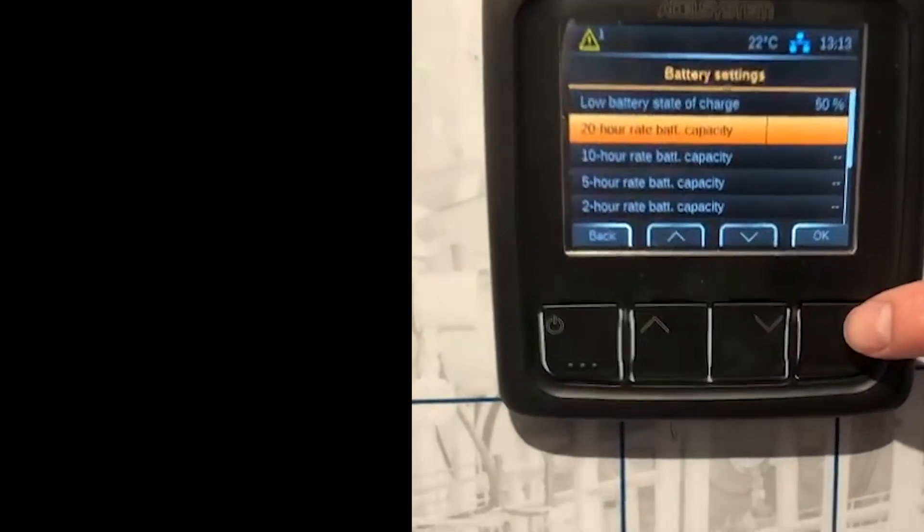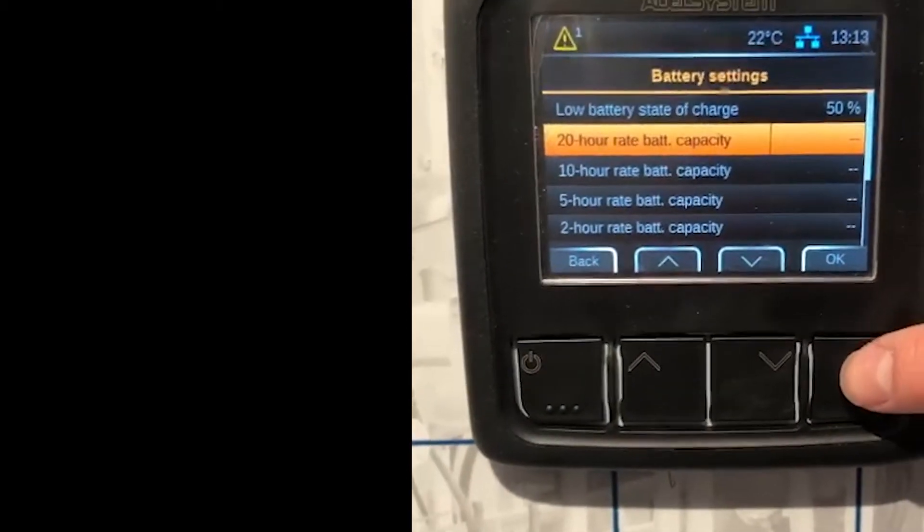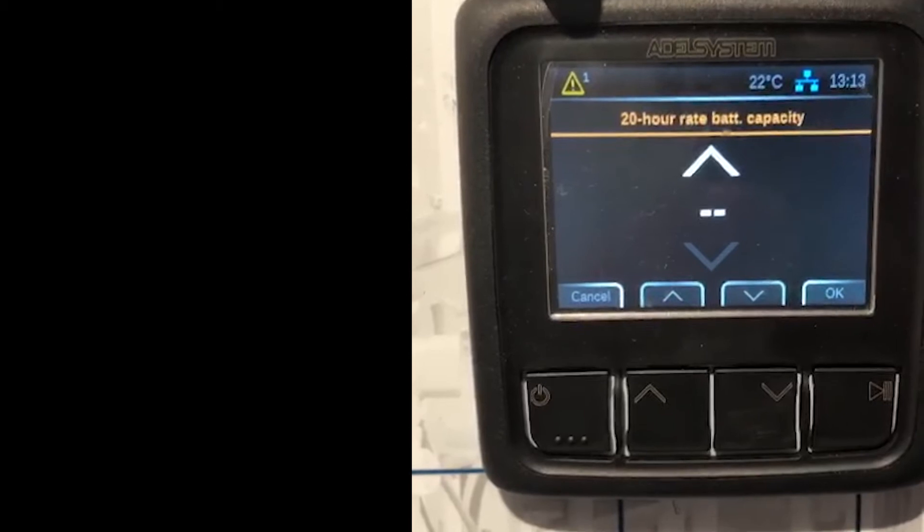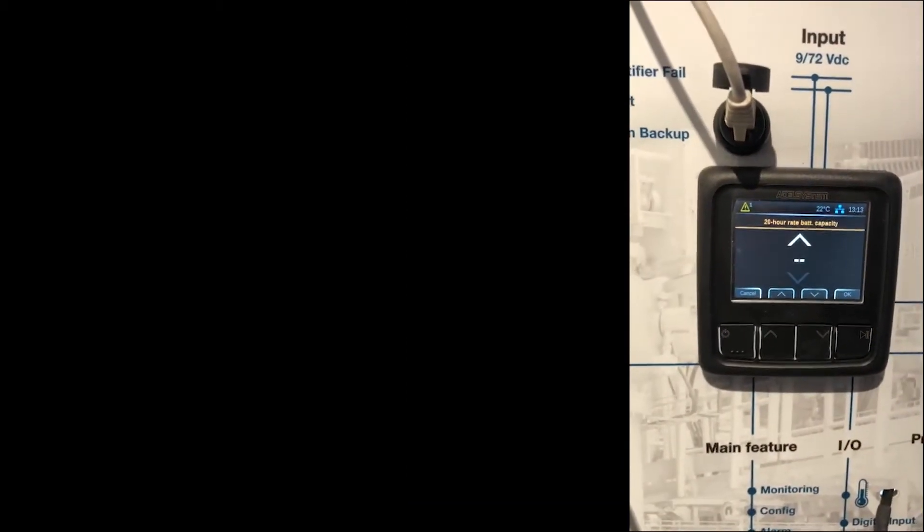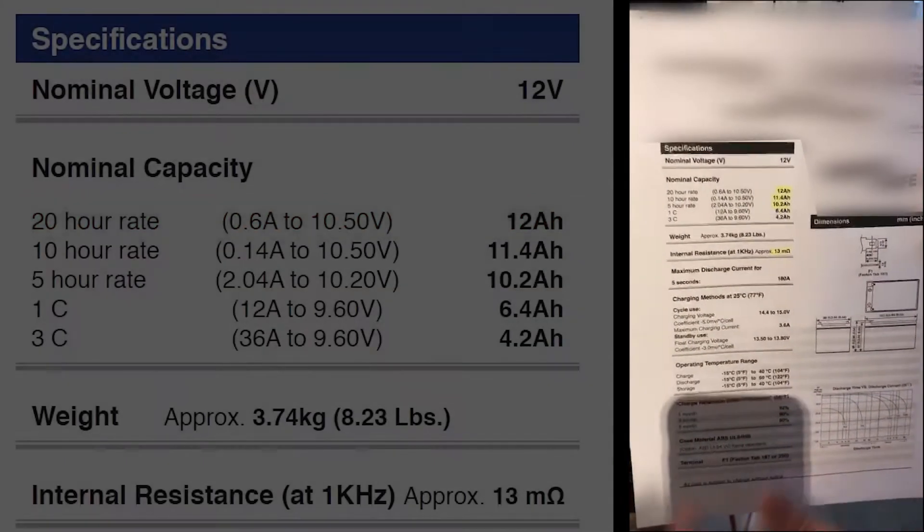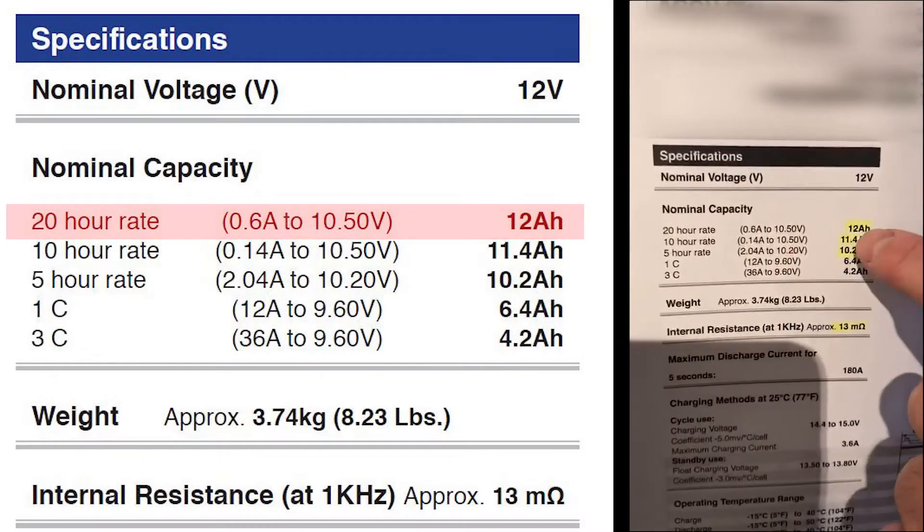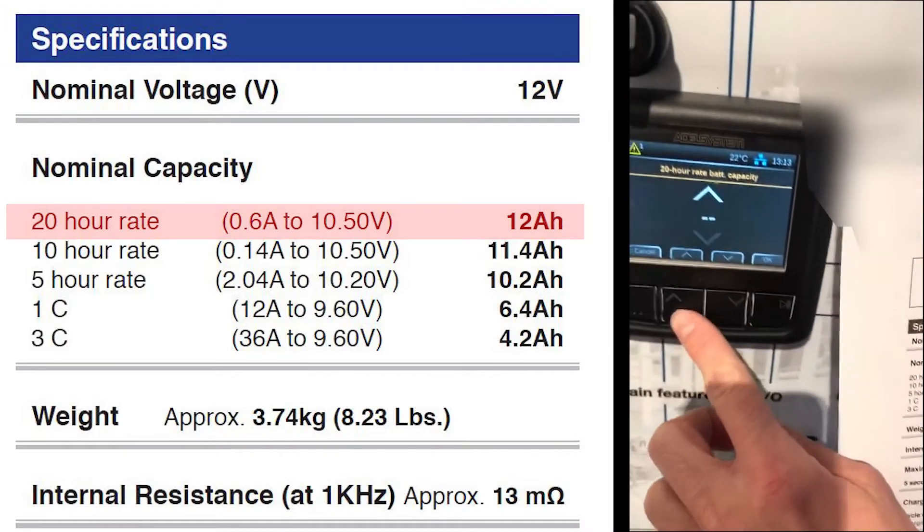Here you have to put the values of the battery. So first of all the capacity. In this case this is the datasheet, so you have to take the datasheet, 20 hour rate, 12 ampere hour.